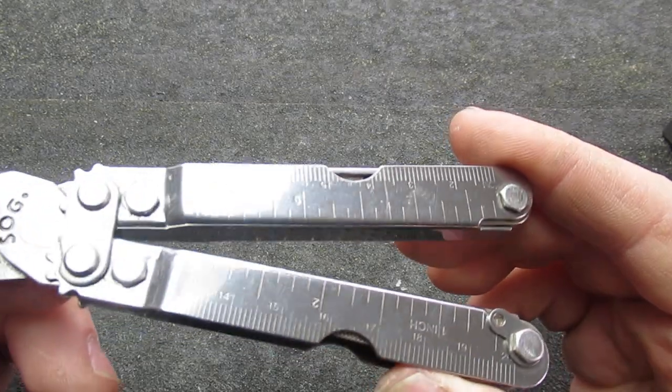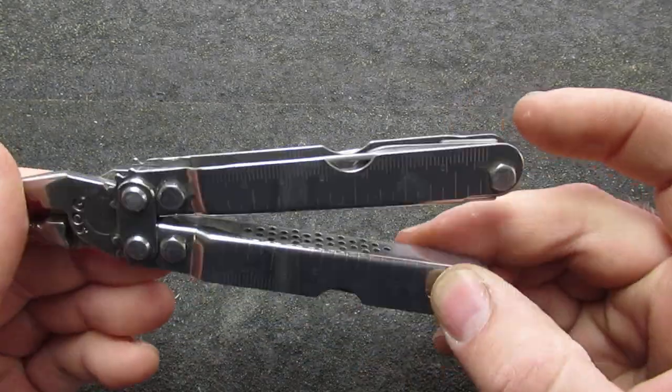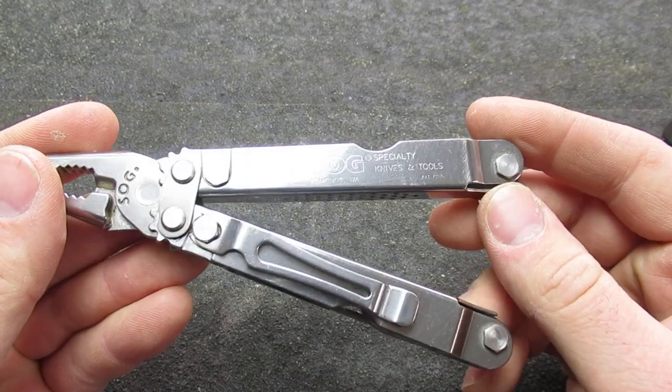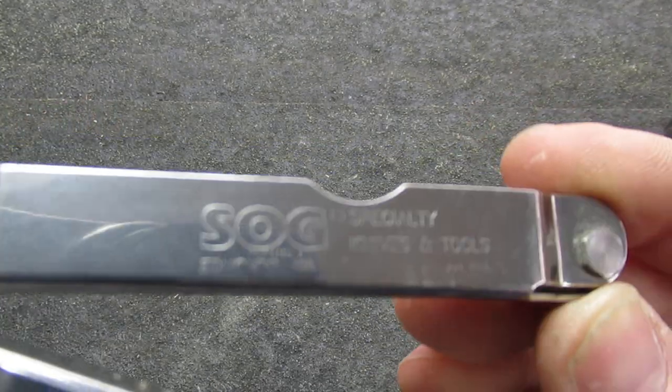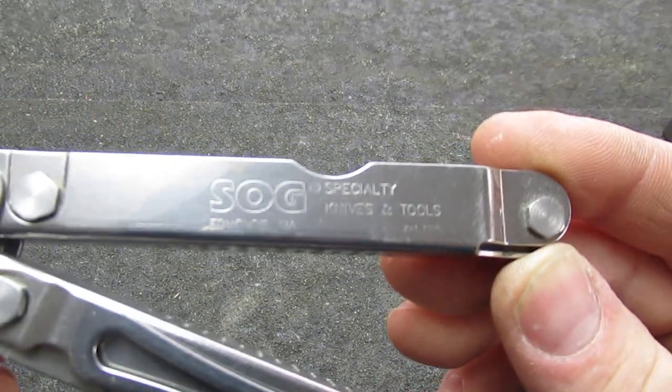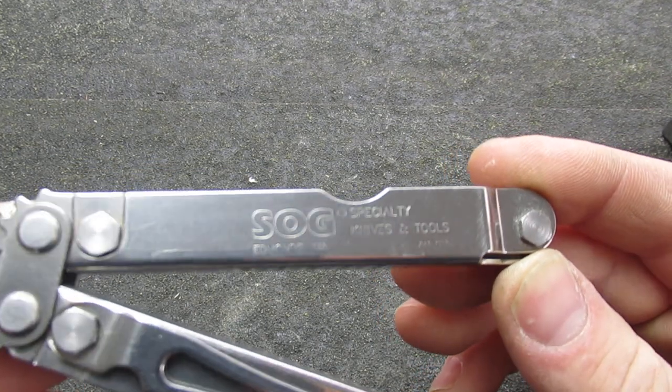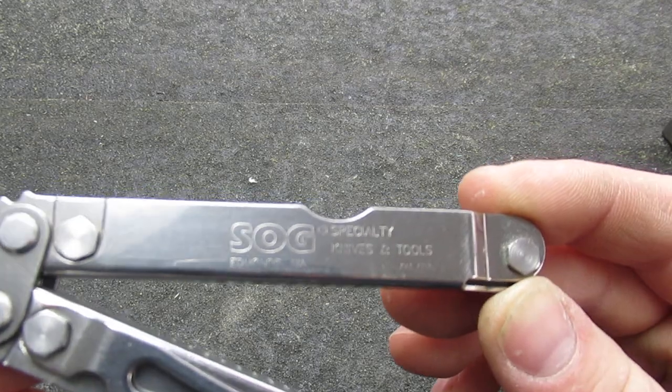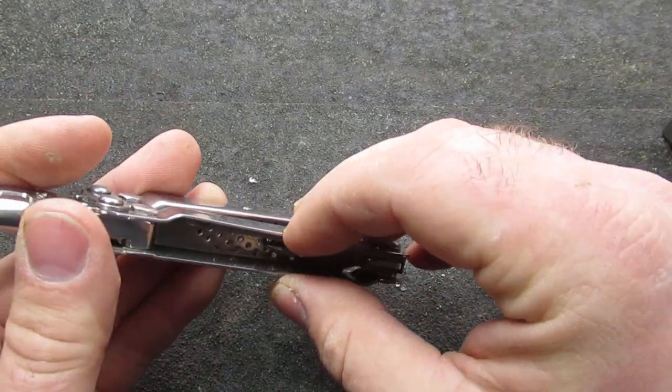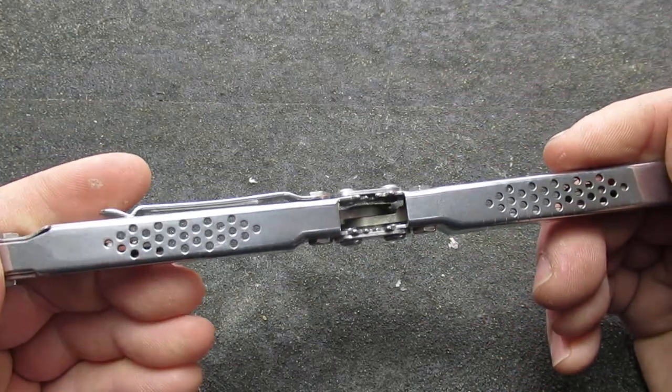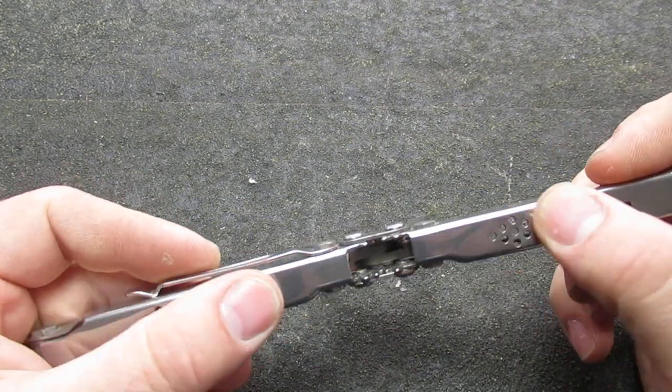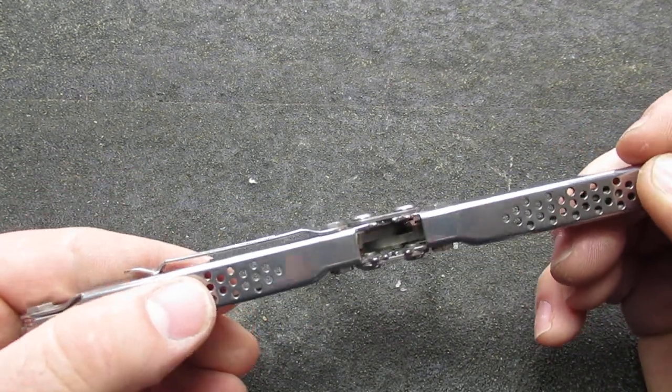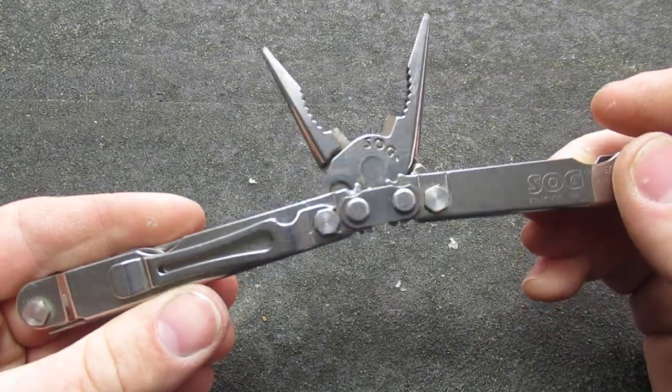On this side we've got the ruler, the lanyard loop there as well. It says Washington, Edmonds Washington Specialty Tools, and we'll notice that we have these holes right here to lighten up the multi-tool and make it a little bit lighter.